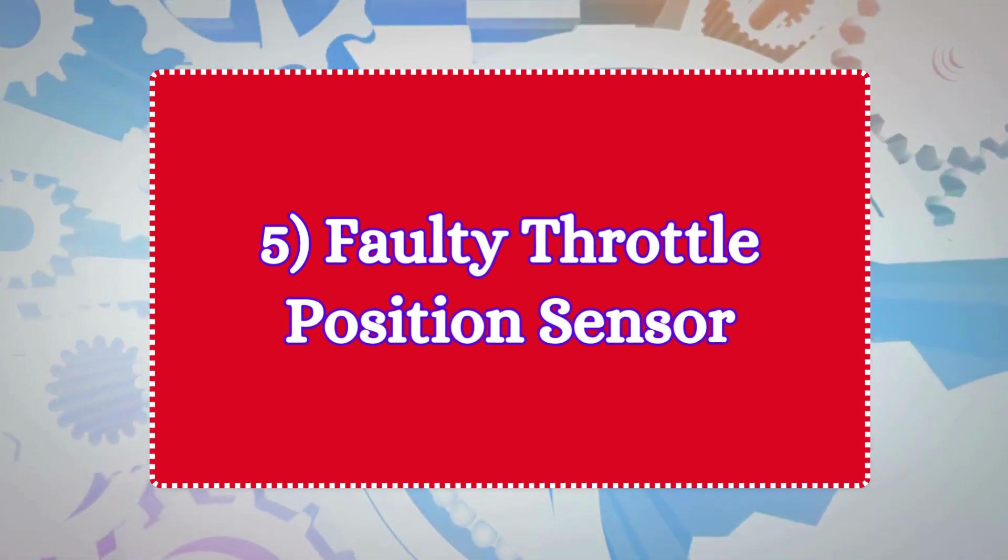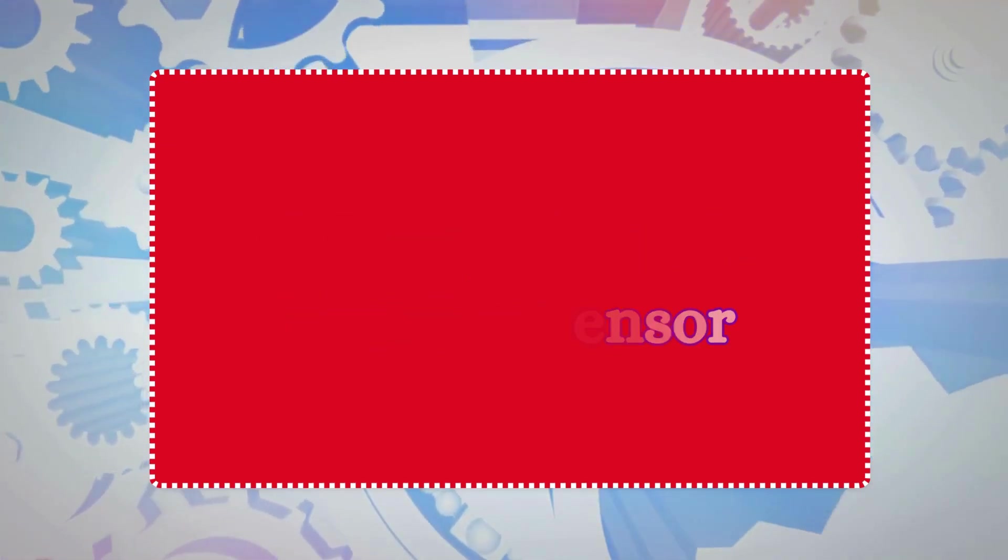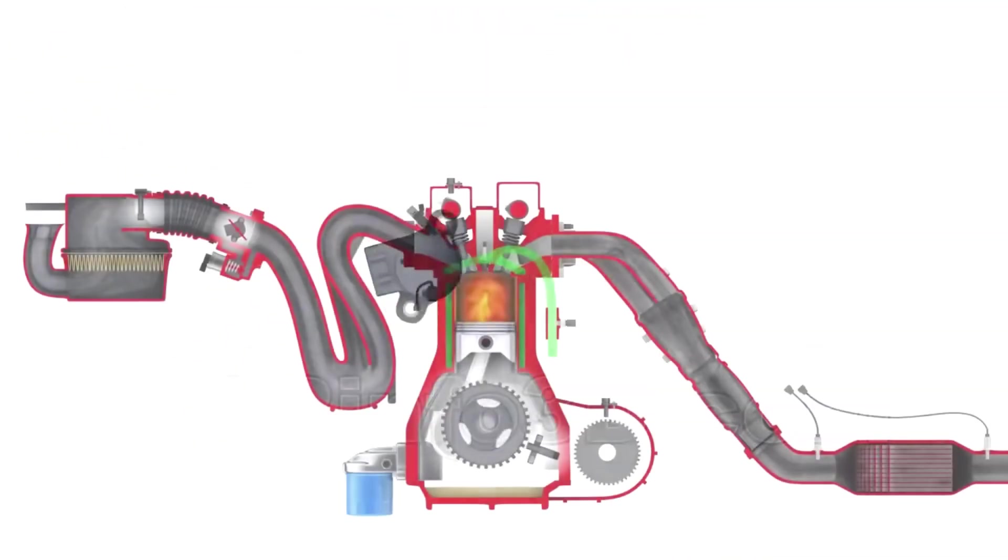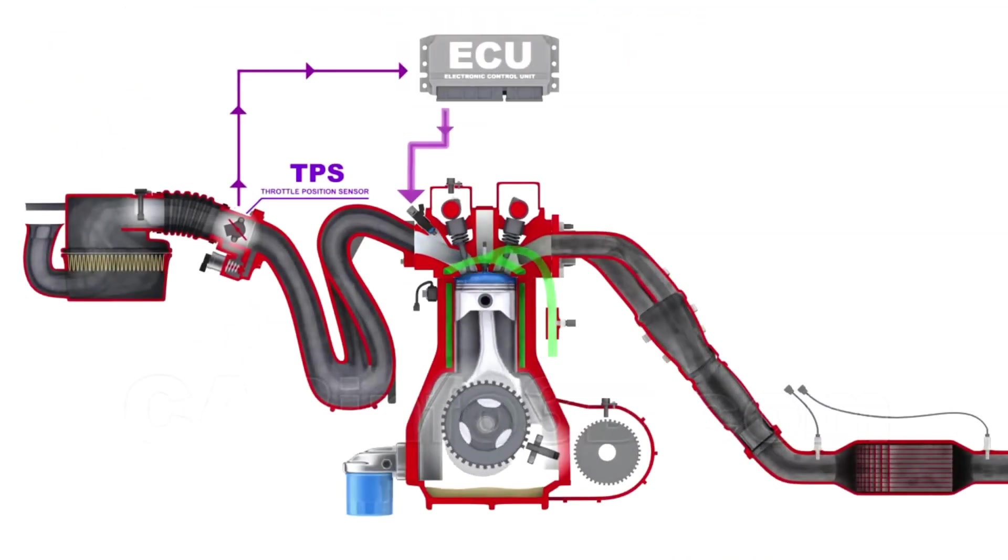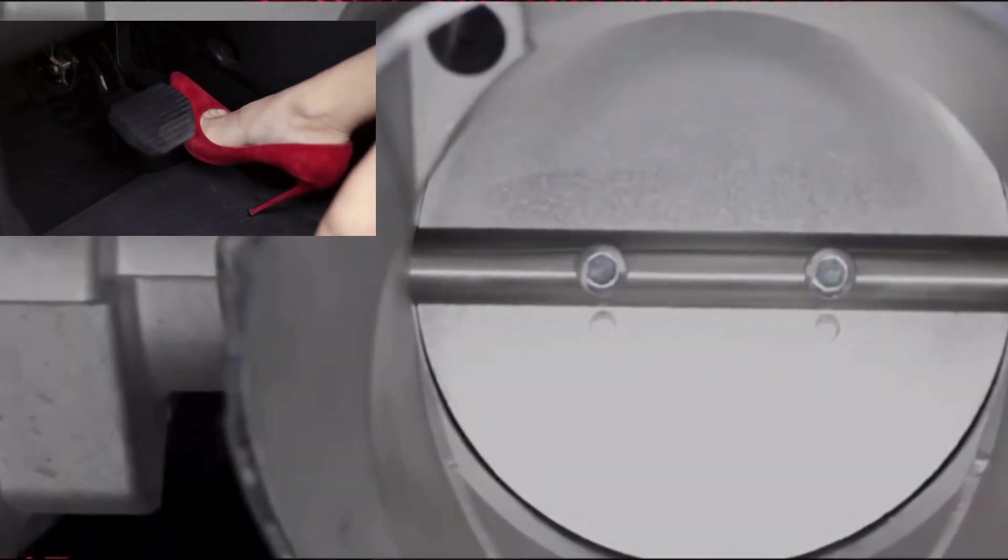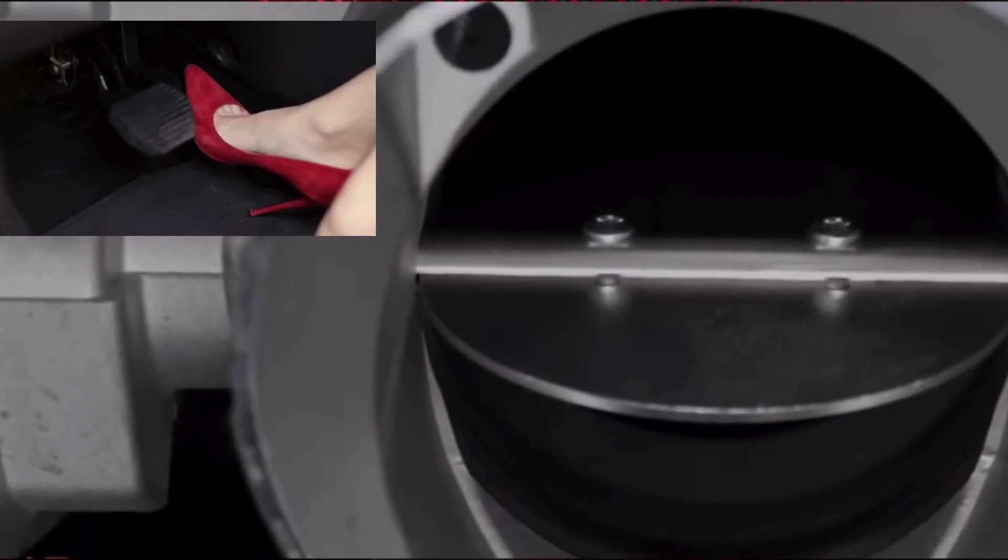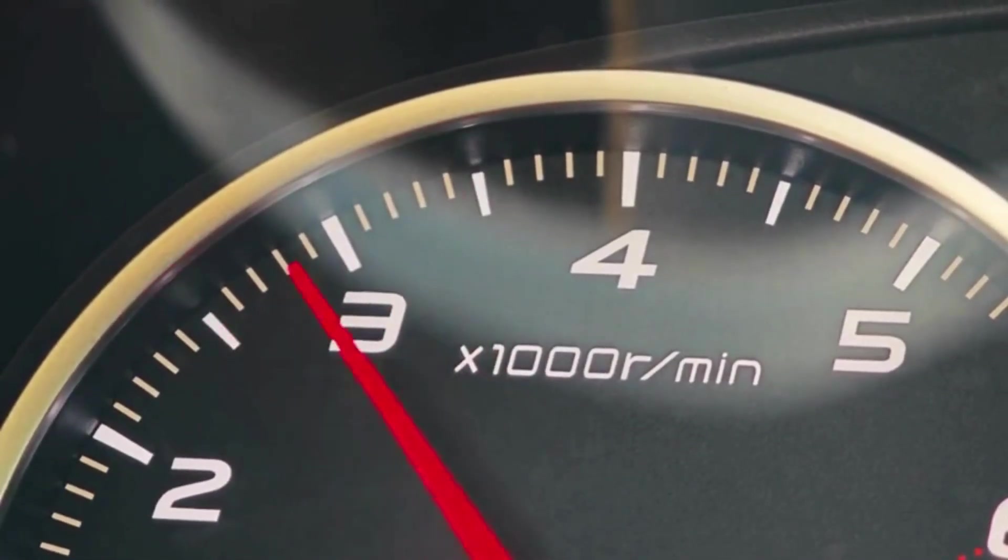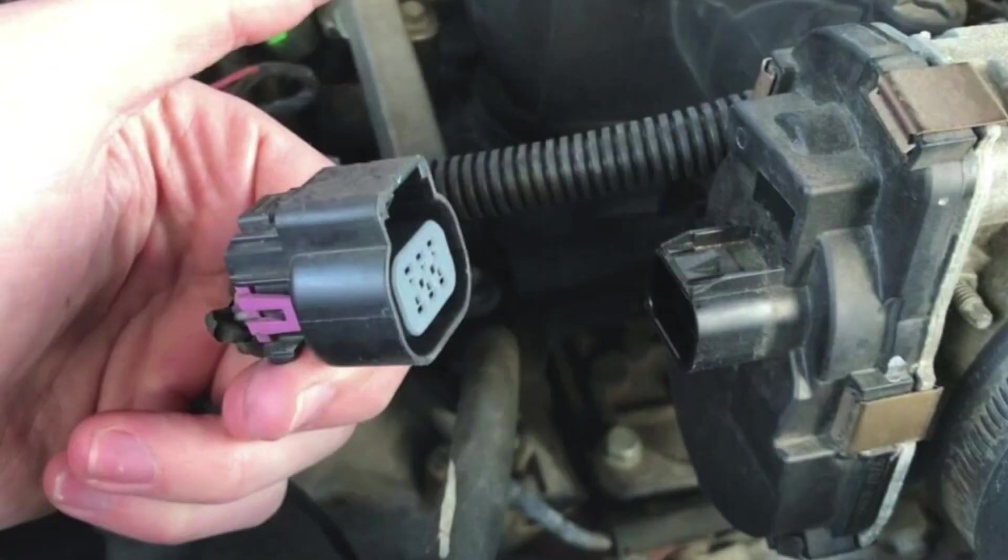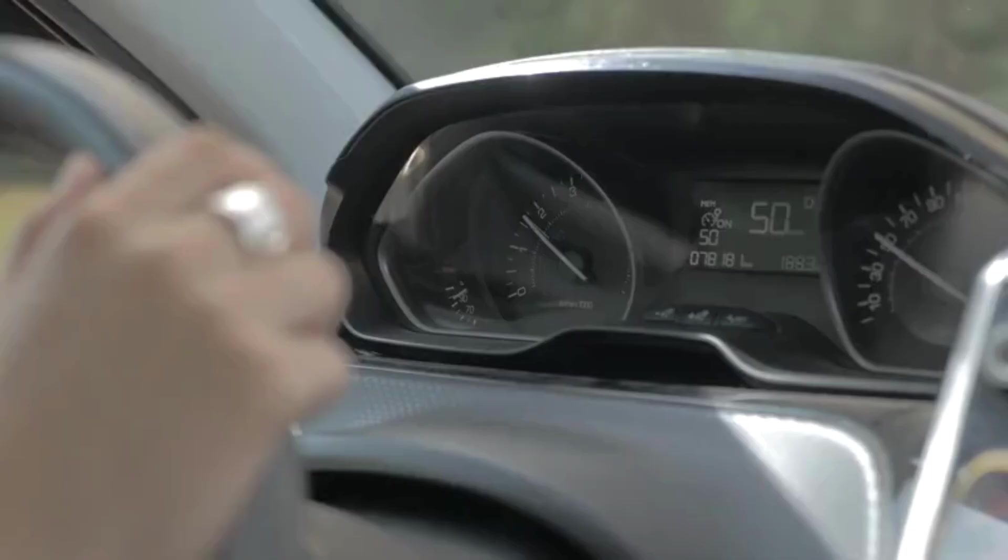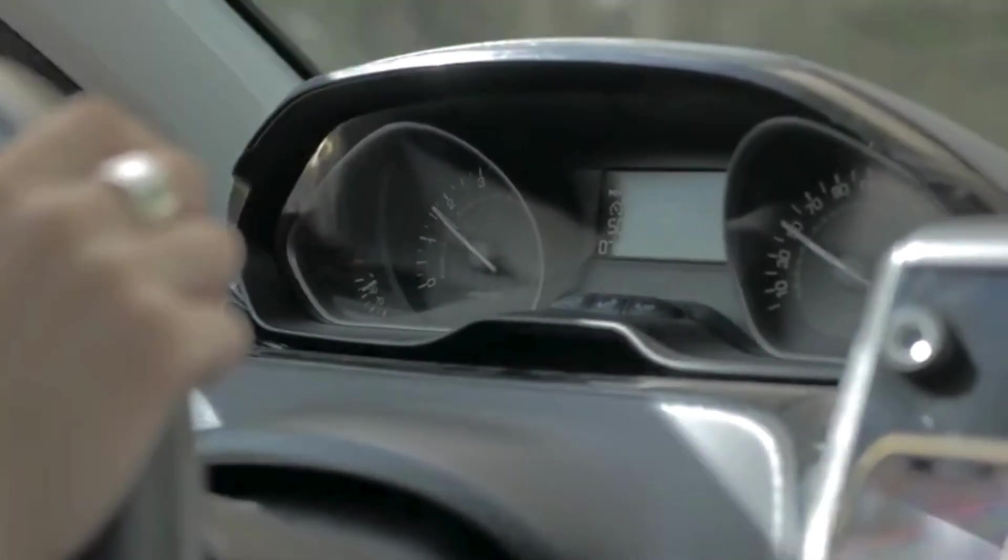5. Faulty Throttle Position Sensor. The throttle position sensor monitors the position of the throttle and provides information to the ECU to adjust the air-fuel mixture. If it malfunctions, it may send incorrect signals, causing erratic throttle control. This leads to inconsistent acceleration, resulting in jerks when you press the gas pedal. If your throttle position sensor is malfunctioning, replace it. This ensures smooth throttle response and acceleration.